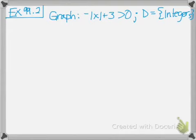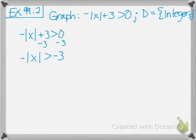Graph negative absolute value of x plus 3 is greater than 0, domain is the integers. The first thing you have to do is solve for the absolute value of x. Move the 3 to the other side: negative absolute value of x is greater than negative 3. Then divide by negative 1 — remember, when you divide by a negative, you switch the sign. So instead of greater than, it becomes less than: the absolute value of x is less than 3.